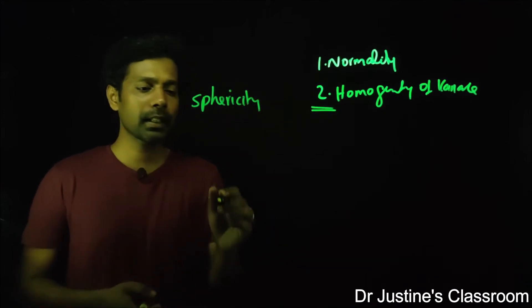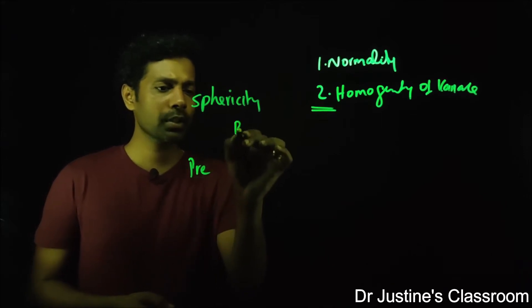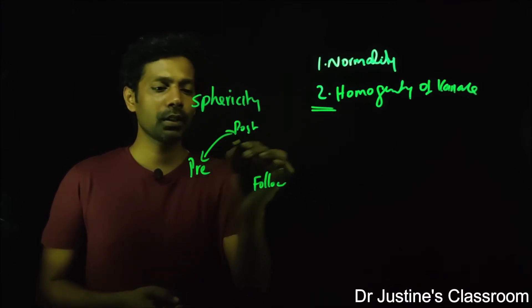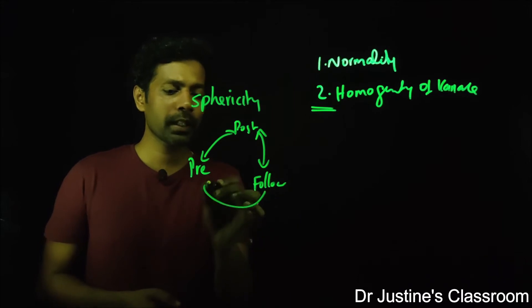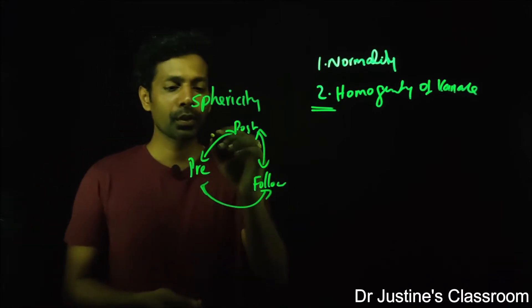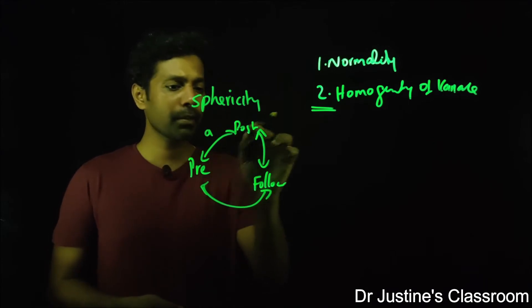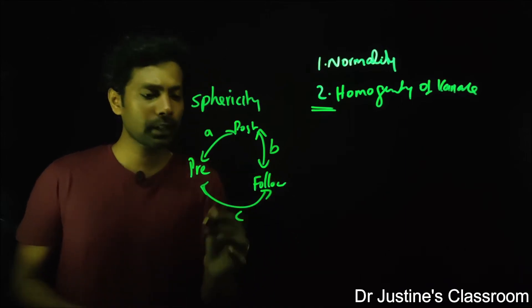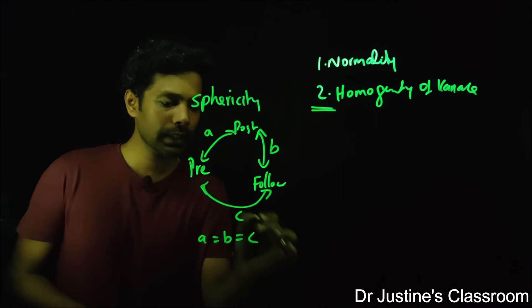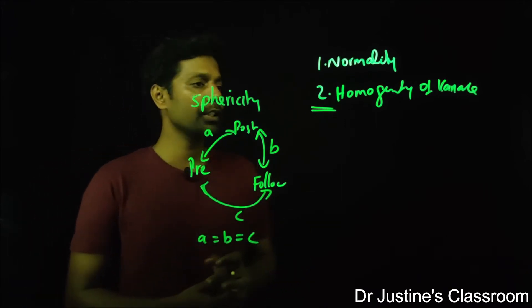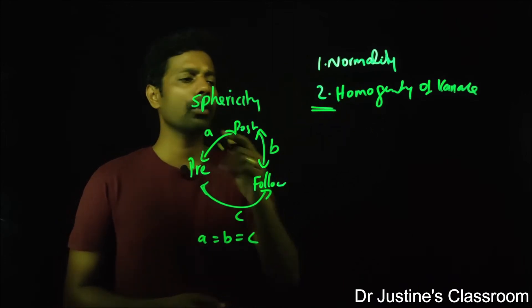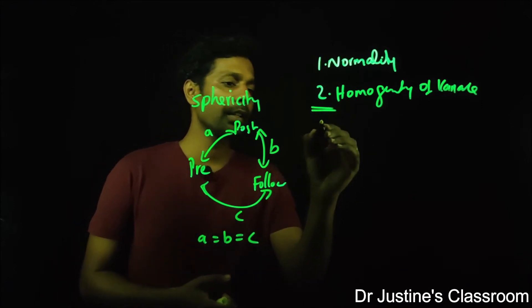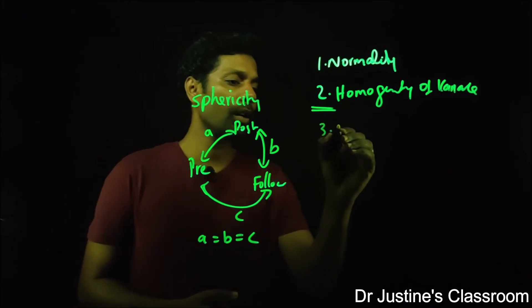Sphericity applies when you have repeated measurements like pre-test, post-test, and follow-up. The correlations between each pair of time points — pre & post (a), post & follow-up (b), and pre & follow-up (c) — should be equal. So sphericity means a = b = c.